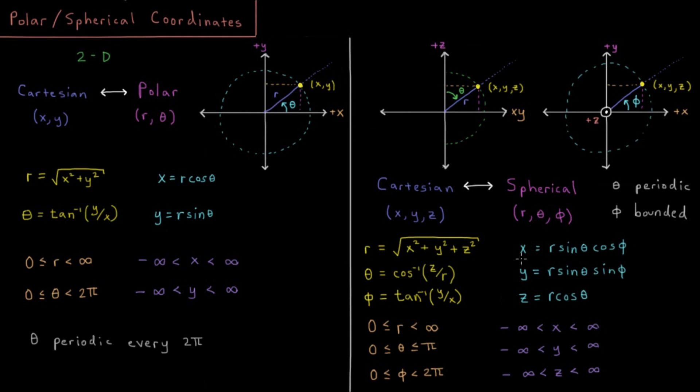Converting back to Cartesian coordinates, we have x equals r times sine theta times cosine phi, y equals r times sine theta times sine phi, and z is just equal to r cosine theta.